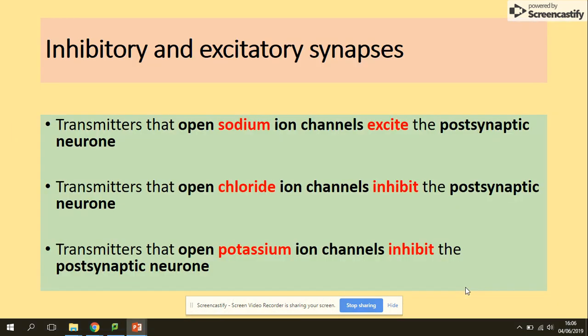To summarize the types of synapses: neurotransmitters that open sodium ion channels will excite the postsynaptic neuron membrane. Transmitters that open chloride ion channels will inhibit the postsynaptic neuron membrane. Transmitters that open potassium ion channels will also inhibit the postsynaptic neuron membrane. So only neurotransmitters that open sodium ion channels will cause the passage of the action potential from the presynaptic neuron to the postsynaptic neuron membrane. In our next video, we will be looking at examples of those synapses and the passage across them.